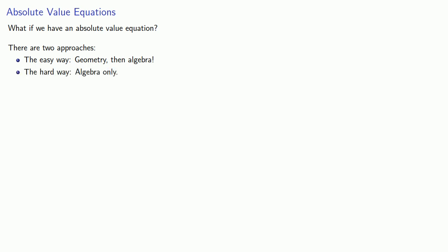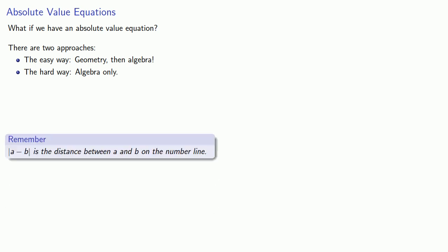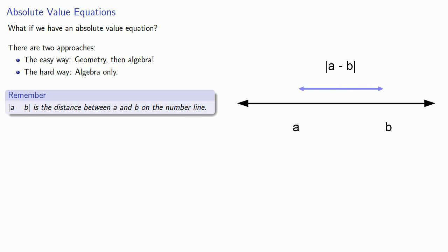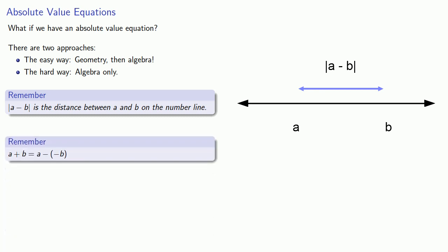We'll do things the easy way first. Doing things the easy way requires remembering two important concepts. First, the absolute difference a minus b is the distance between a and b on the number line. And second, we're not always going to get an expression a minus b, so it's useful to remember that a plus b is the same as a minus negative b.